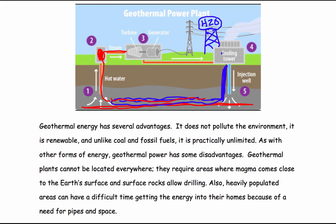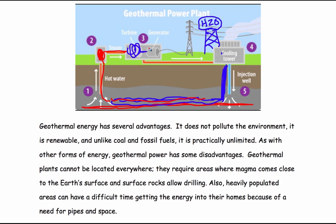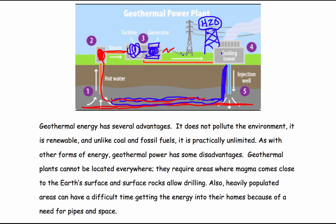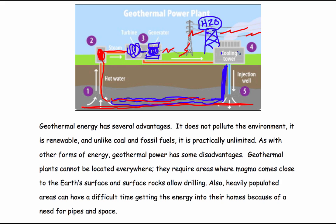That steam runs into a room where it spins a turbine. The turbine is connected to an axle, which is connected to a generator. The generator has magnets inside, and the metal windings spin inside the magnet to create a magnetic field. That magnetic field produces electricity, which is sent out onto the grid and on to our homes, businesses, and schools.